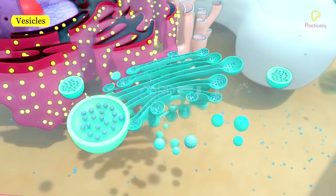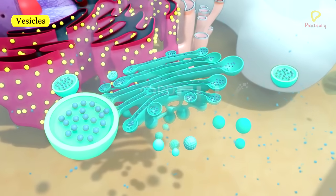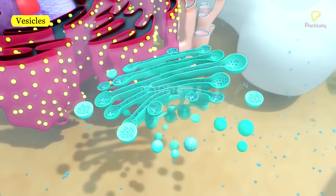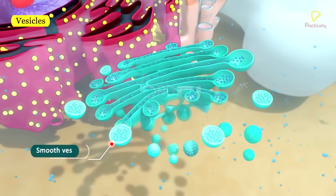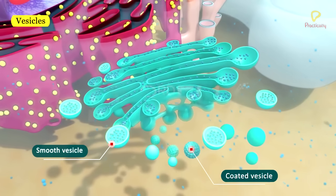Vesicles are small sacs. They develop from tubules. Vesicles are of two kinds: smooth vesicles and coated vesicles.